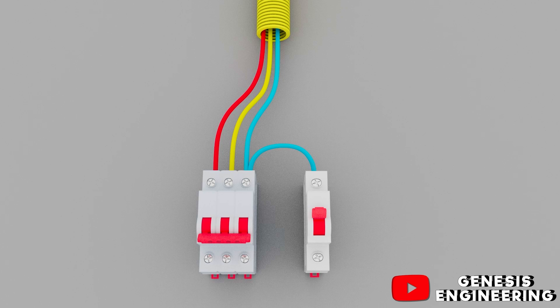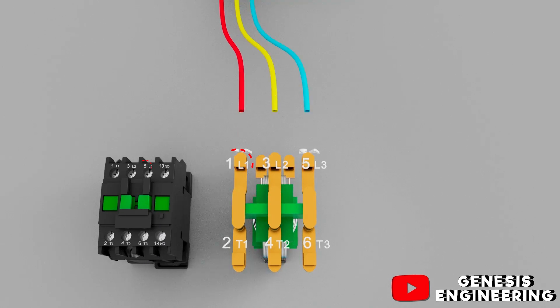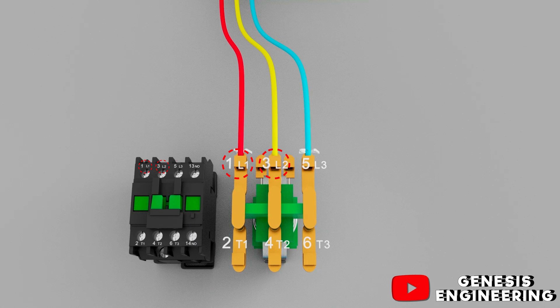At the output of the three-phase circuit breaker we connect the three phases to the contactor power contacts, which are the contacts L1, L2, and L3 or 1, 3 and 5 where the line receives.